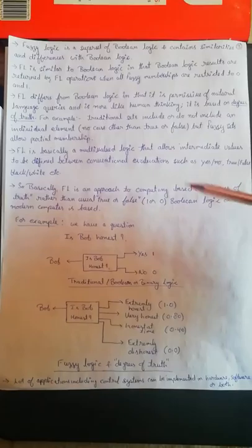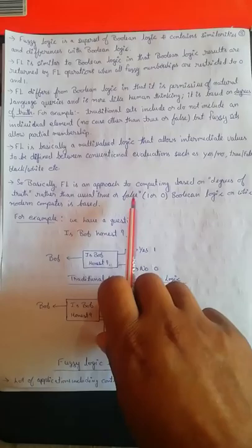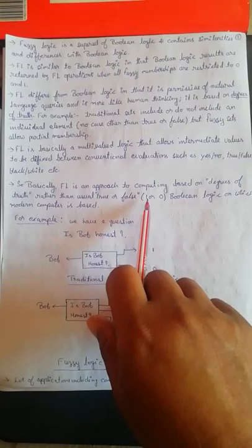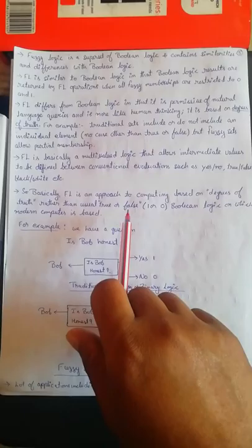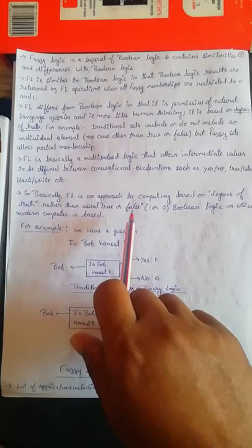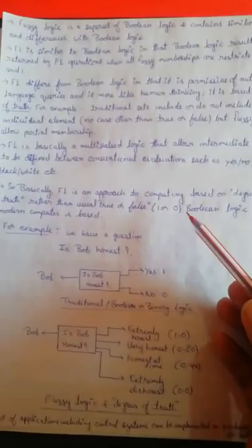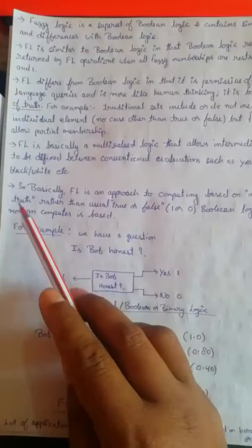You can understand fuzzy logic with the help of boolean logic. Fuzzy logic and boolean logic have many similarities but are also dissimilar. In boolean logic, the output is either 1 or 0 — true or false. Our computers are based on binary values and binary processing of 1 and 0. But this is not the case with fuzzy logic — fuzzy logic is based on degrees of truth.